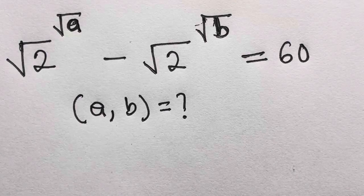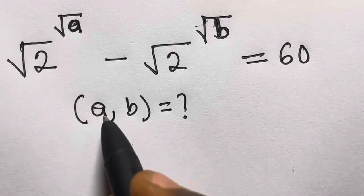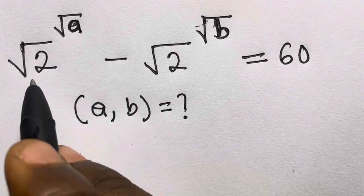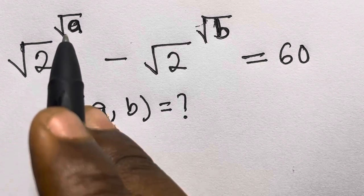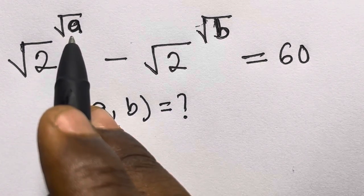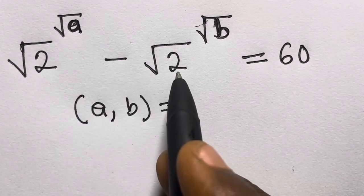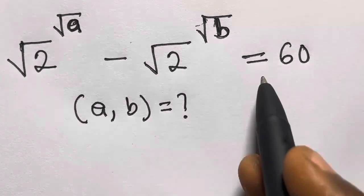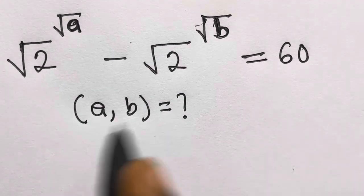Hi, welcome to Mathematics. In this video, we want to solve for a and b in: square root of 2 raised to the power square root of a, minus square root of 2 raised to the power square root of b, equals 60. Let's see a solution.